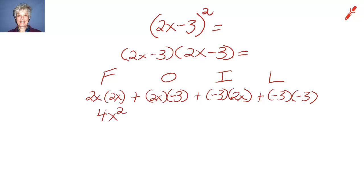So I'll have 4x² plus negative 6x plus negative 6x. So the final answer is 4x², well almost the final answer, plus negative 6x, negative 12x plus 9. Now the final answer is 4x² minus 12x plus 9.